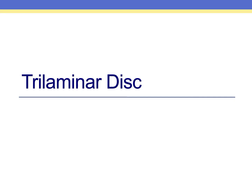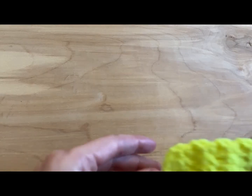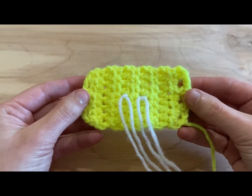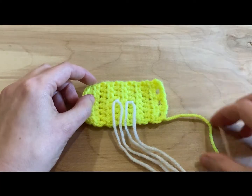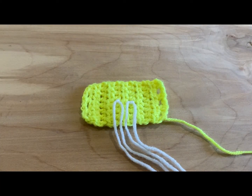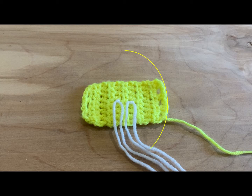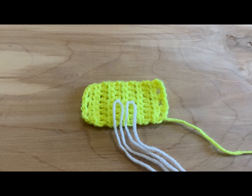We'll start by building the trilaminar disc. The yellow piece represents the endoderm, which will give rise to the inner lining of the gut tube and airways. Keep in mind that this piece represents only a segment of the middle of the germ disc, and the strings and eyelets are just the means of attaching the model pieces together.